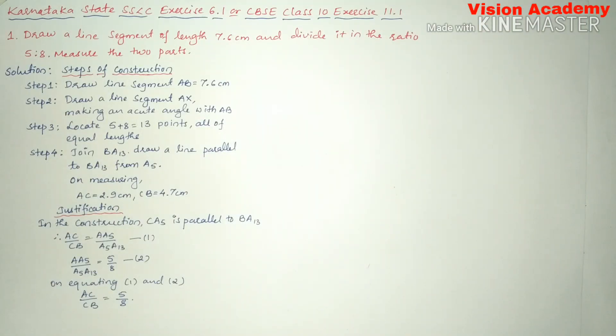In this video, we are going to solve Karnataka state SSLC exercise 6.1 or CBSE class 10 exercise 11.1. Question number one, draw a line segment of length 7.6 centimeter and divide it in the ratio 5 is to 8, measure the two parts.